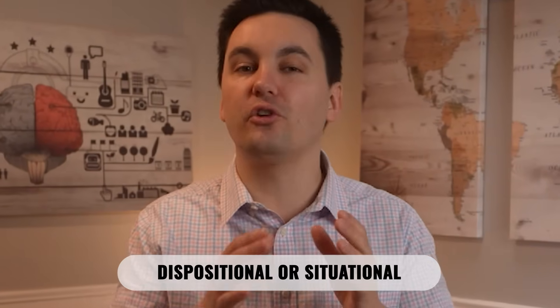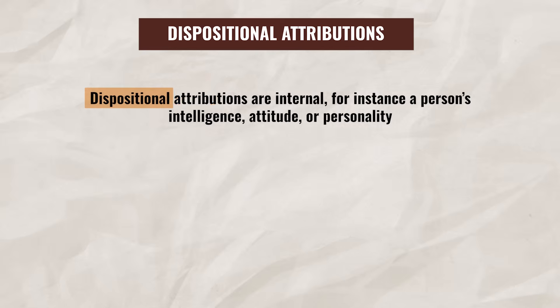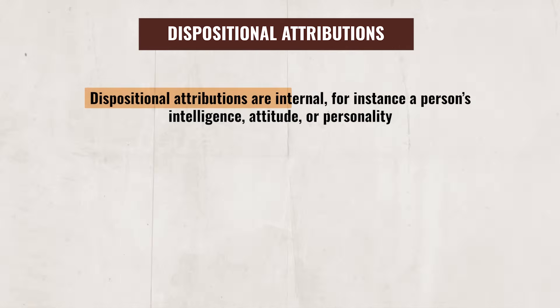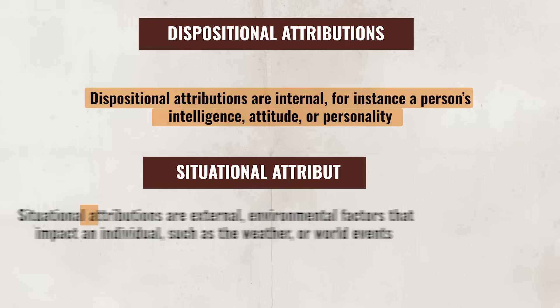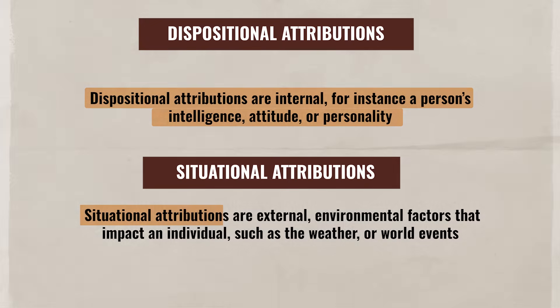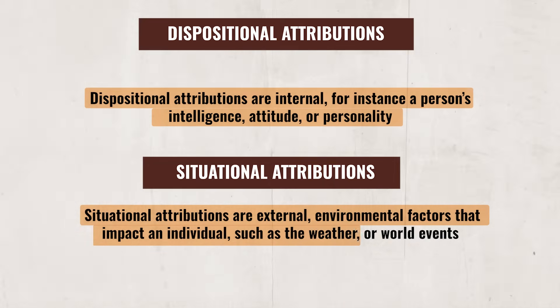We as individuals often attribute an individual's behavior to either dispositional or situational attribution. Dispositional attributions are internal — for instance, a person's intelligence, attitude, or personality — while situational attributions are external, environmental factors that impact an individual, such as the weather or world events.